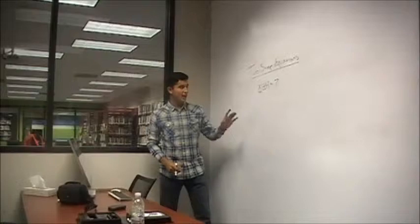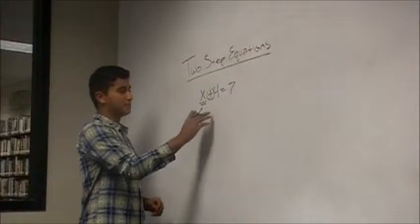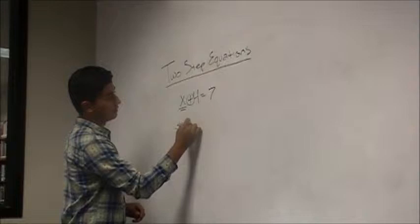So, we have to isolate the variable in order to solve for it. What we're going to do first is subtract by 4 since we're going to do the inverse function. So, x plus 4 minus 4.